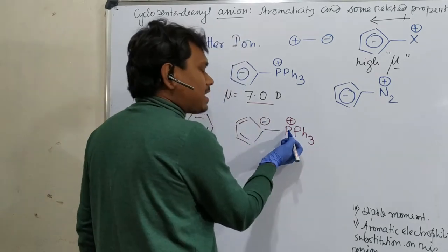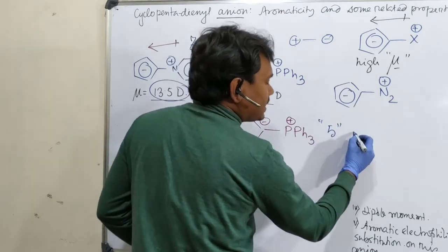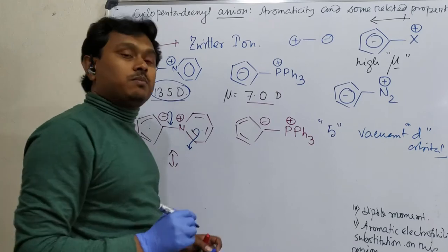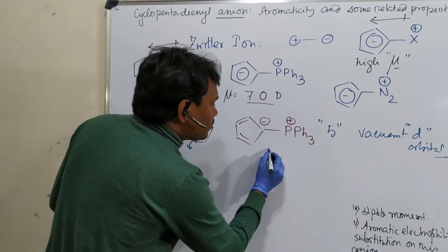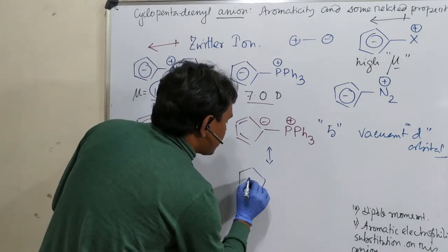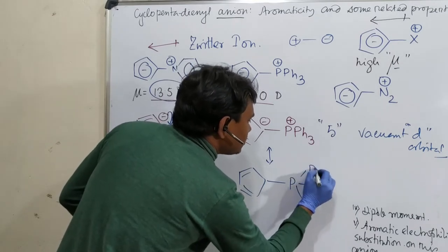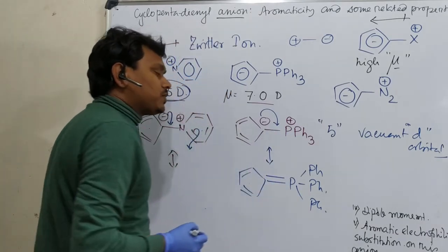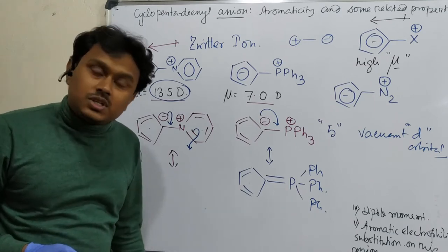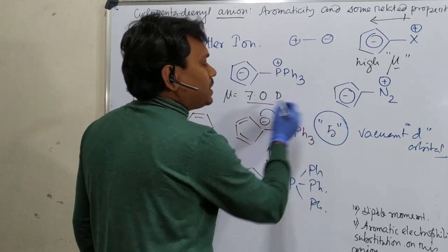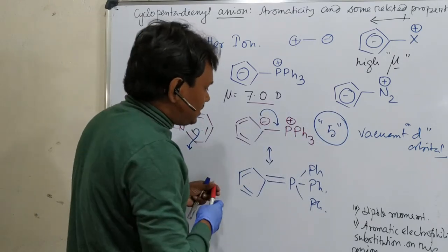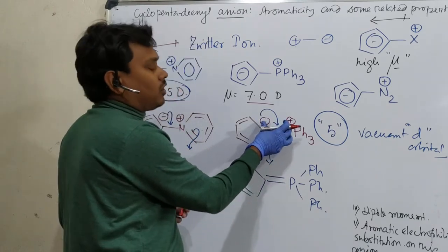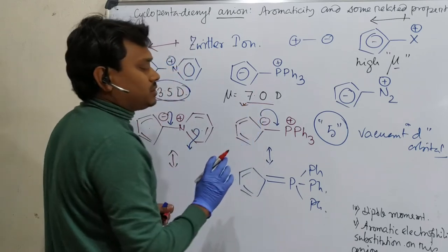Instead, consider the phosphorus analog. Phosphorus can expand its valency to 5 because it has energetically accessible vacant d-orbitals. This allows phosphorus to form a double bond with the cyclopentadienyl carbon without destroying aromaticity — no resonance energy is wasted. This canonical form, with a P=C double bond, has a significant contribution and reduces the overall charge separation, meaning the dipole moment is reduced to 7.0 D for the phosphorus compound compared to 13.5 D if full charge separation were present.